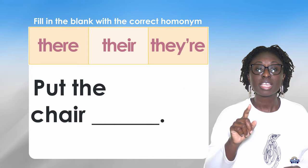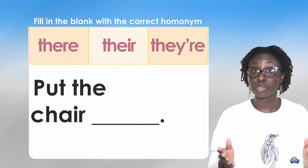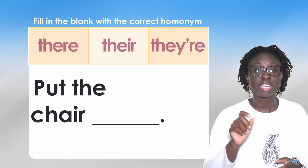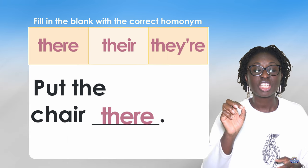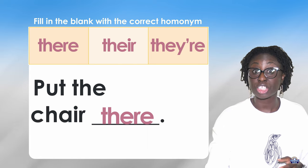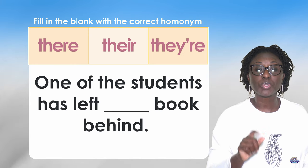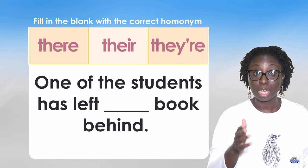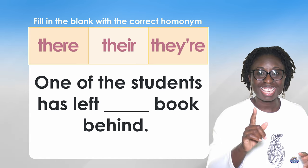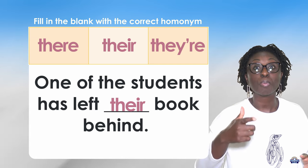Put the chair blank. Which one do you think? Put the chair T-H-E-R-E — there, indicating a particular location. One of the students has left blank book behind. Which one will it be? Yes — T-H-E-I-R. Their book behind.